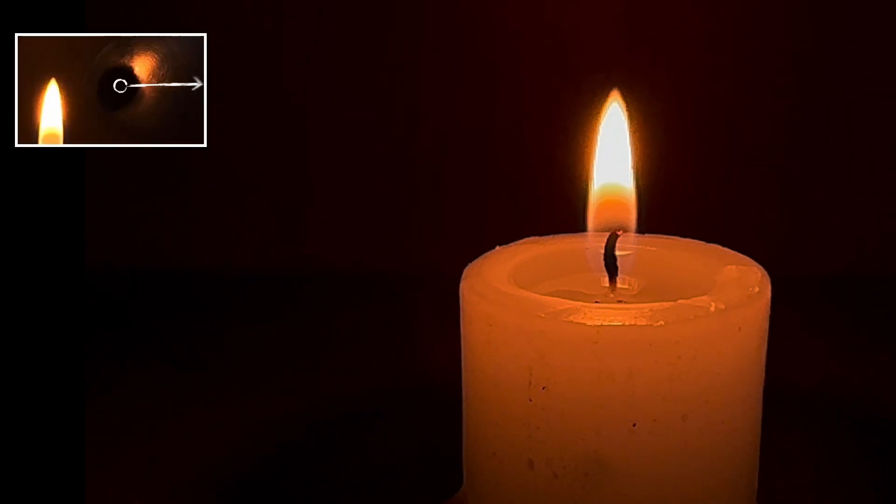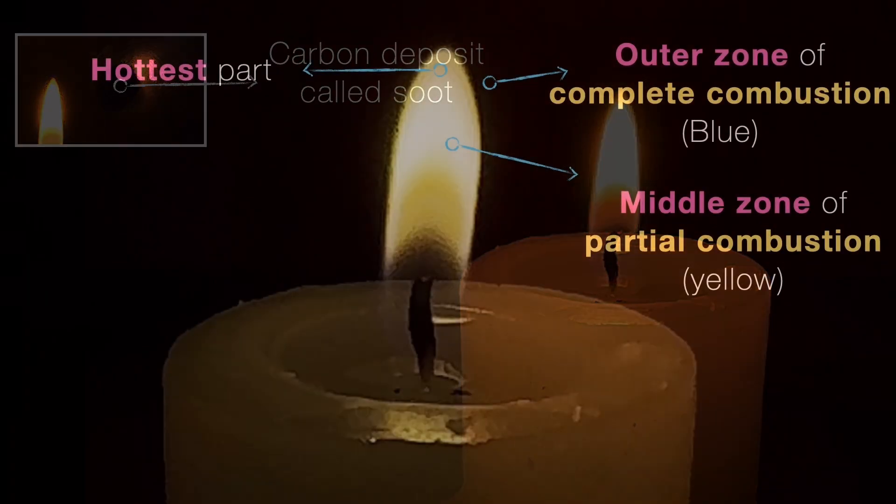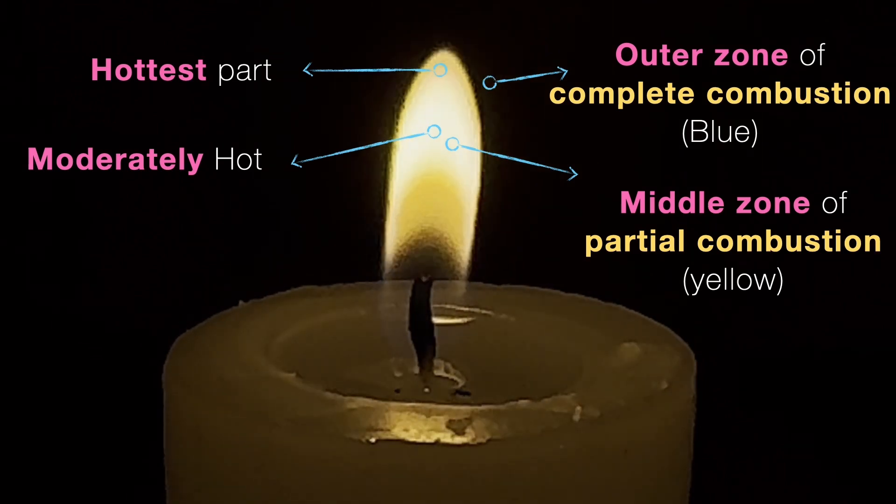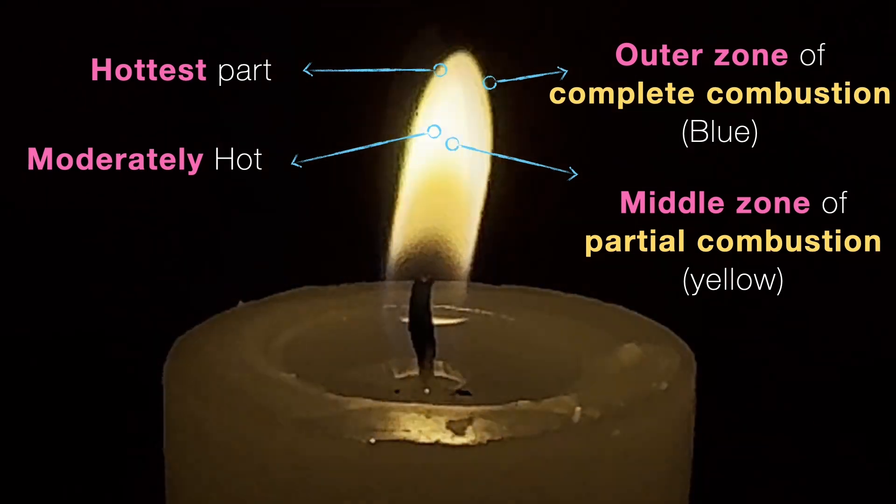That black mark is a sign of incomplete combustion, and this zone is moderately hot, produces yellow glow, and leaves behind the carbon soot that we saw.